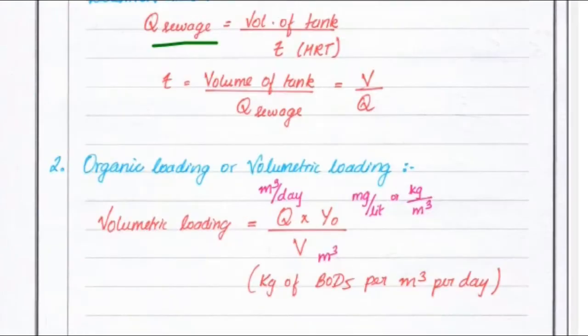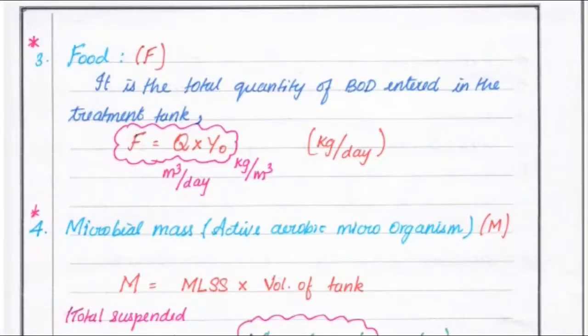Next is organic loading or volumetric loading. Volumetric loading equals Q, that is discharge, into Y-naught divided by V. Q is in terms of meter cube per day, Y-naught is in milligram per liter or kg per meter cube, and V is in meter cube. So the unit is kg of BOD5 per meter cube per day.